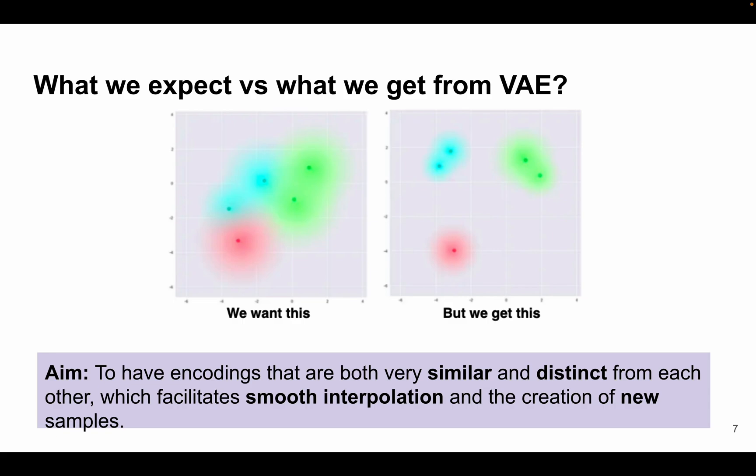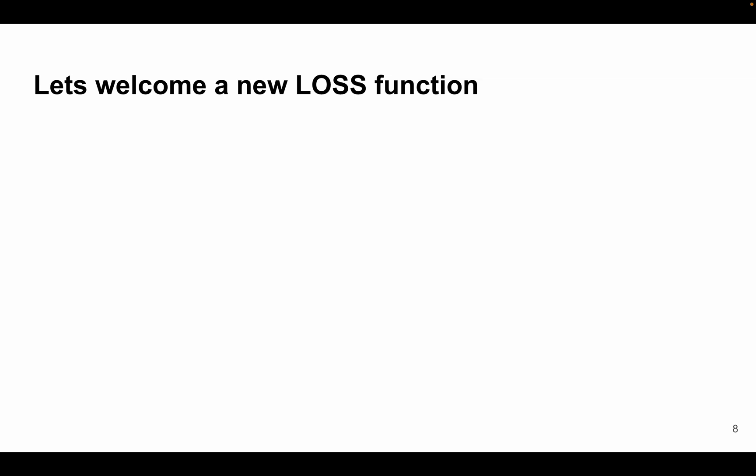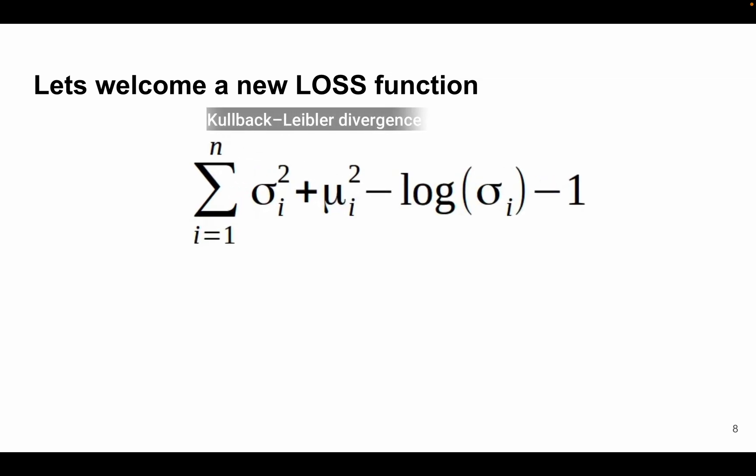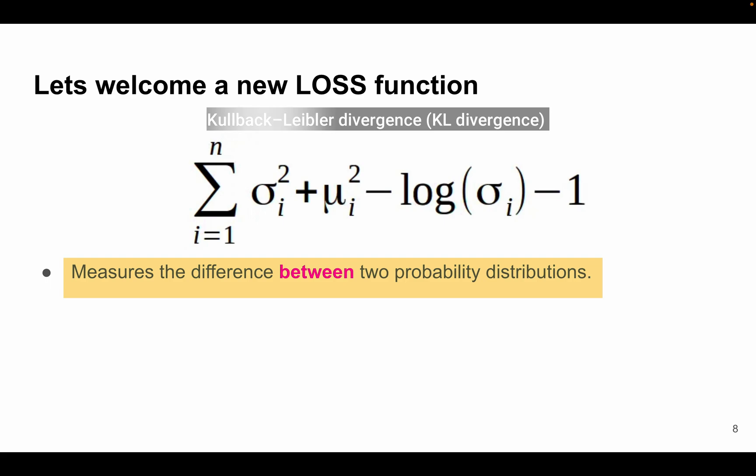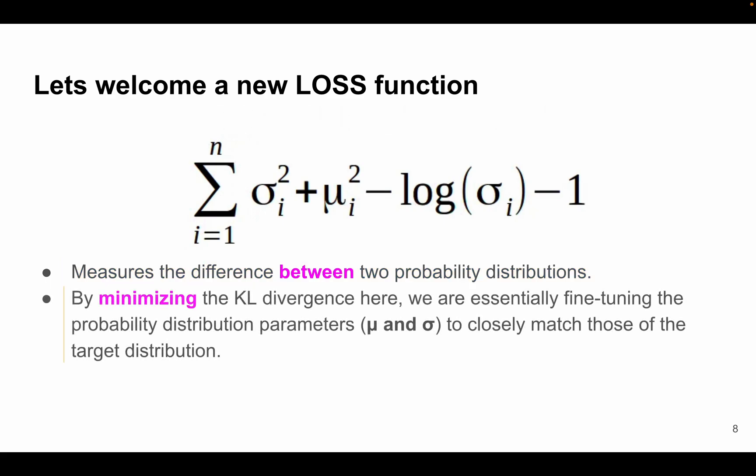Now how to achieve this kind of distribution? So let's welcome a new loss function. Now to achieve this aim that we discussed in the previous slide, we incorporate something called as KL divergence loss, or Kullback-Leibler divergence loss. This KL divergence measures the difference between two probability distributions. And by minimizing this KL divergence loss here, what we are doing is we are essentially fine-tuning the probability distribution parameters, that is mu and sigma, to closely match those of the target distribution.